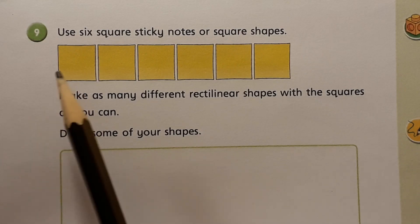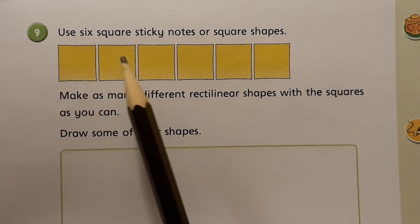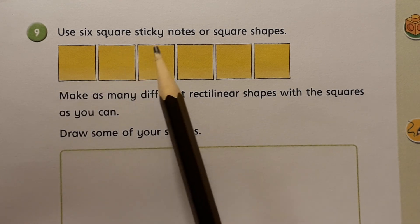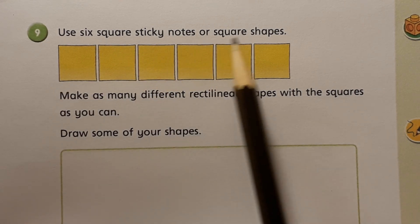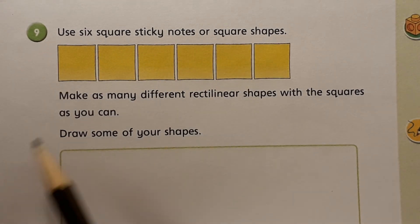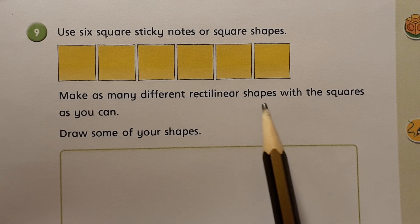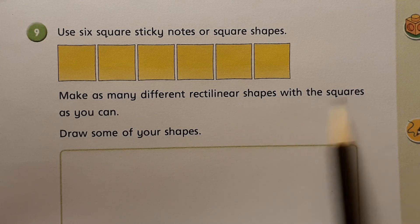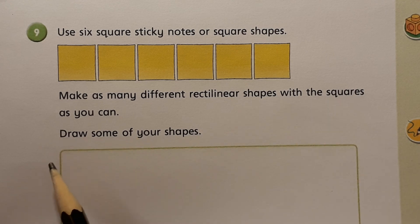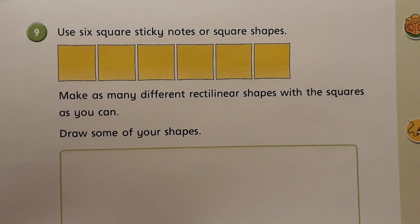Number nine says: use six square sticky notes or square shapes and make as many different rectilinear shapes with the squares as you can, then draw some of your shapes. So work hard and have fun!